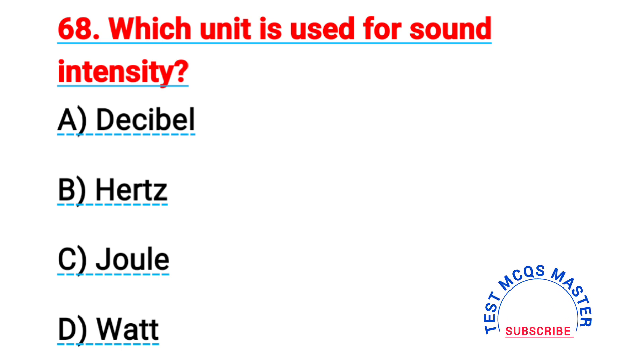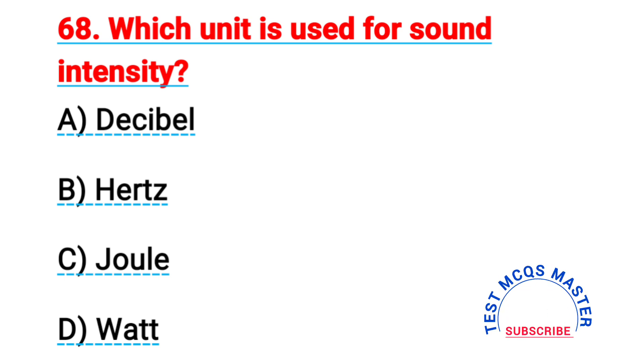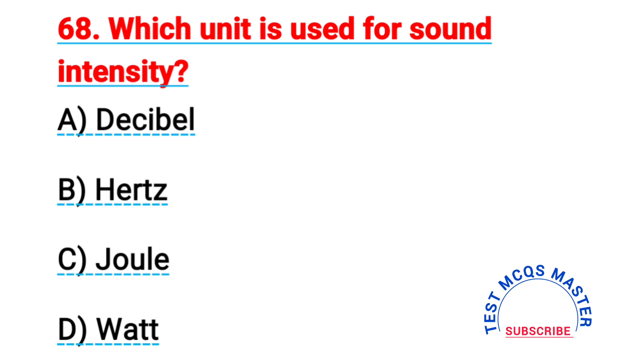Question number sixty-eight: which unit is used for sound intensity? The right answer is A, decibel.